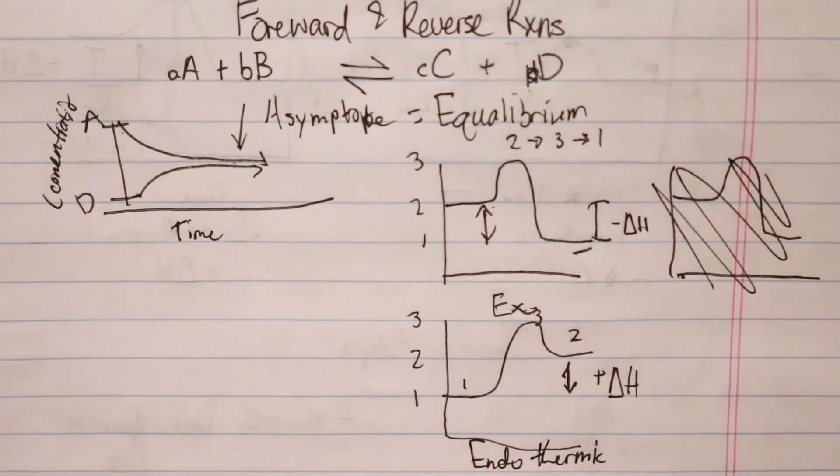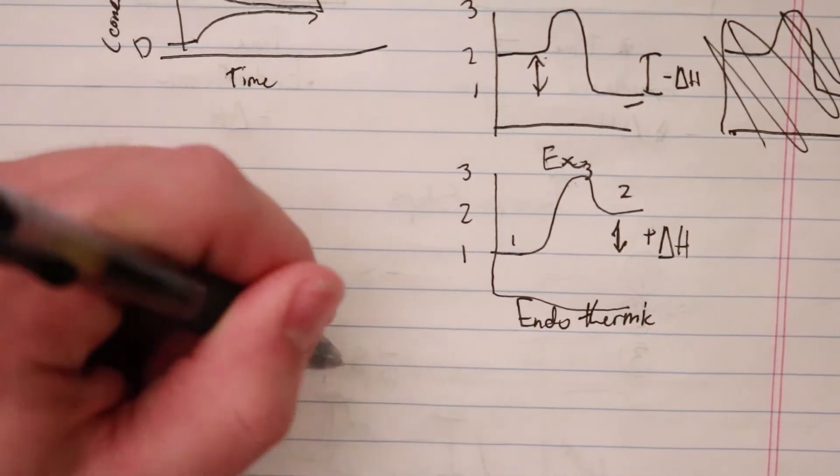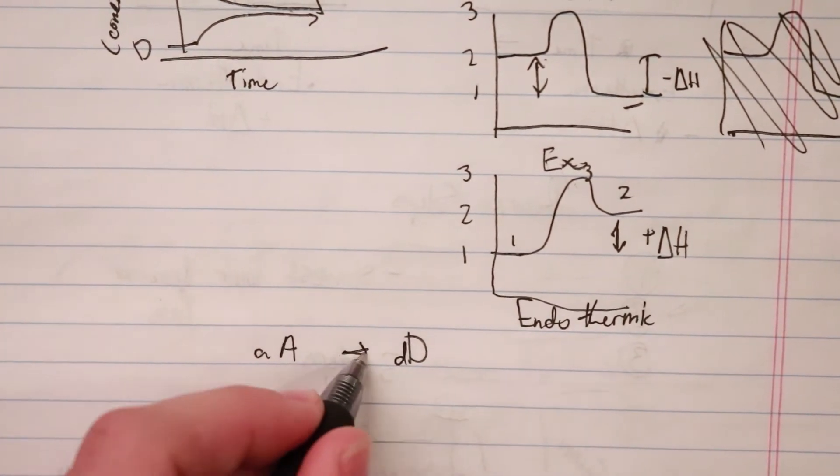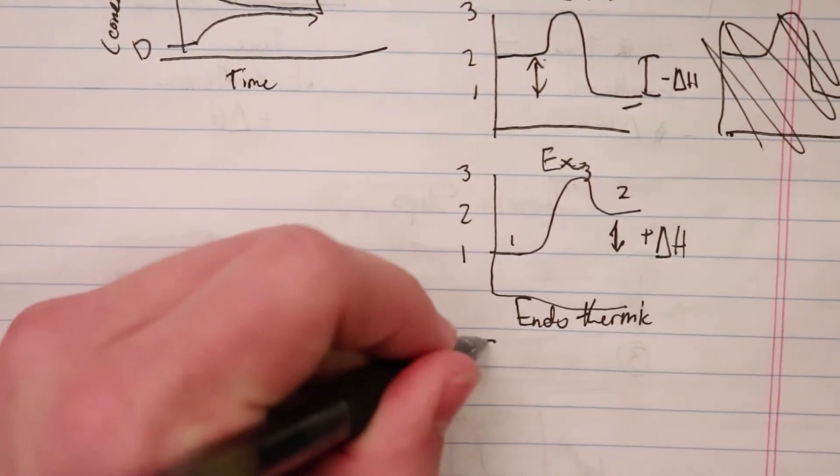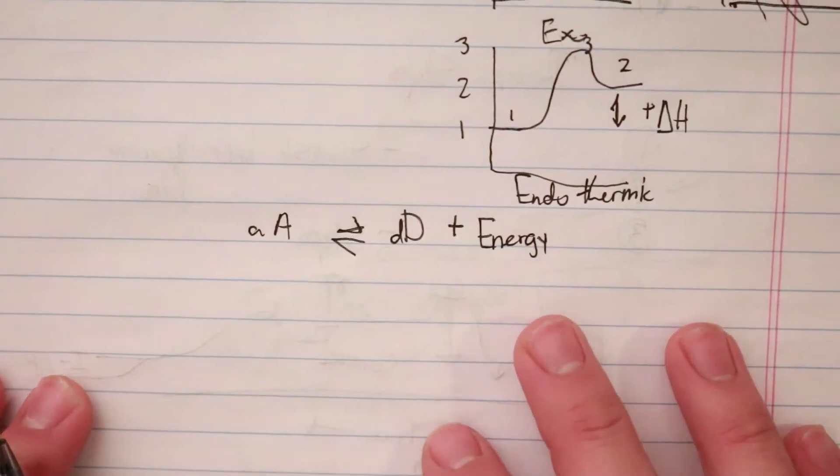How does this look on the equation? If I have A goes to D, I have a forward reaction, I have a reverse reaction, and I have energy on this side of the reaction.